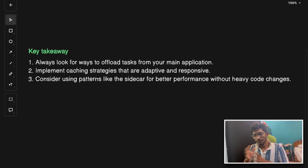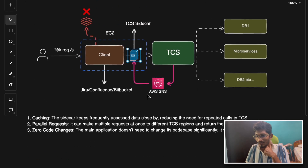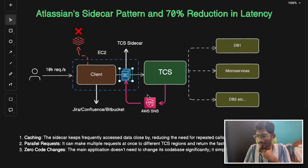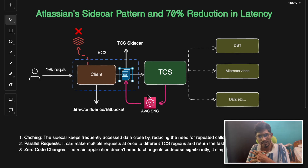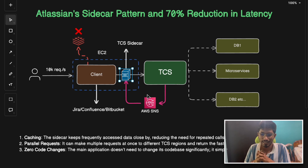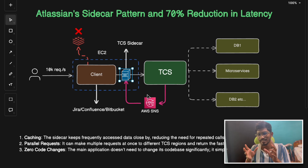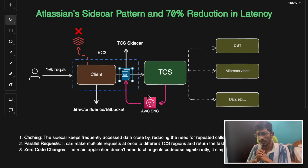That was today's discussion on how the sidecar pattern helped Atlassian reduce latency by 70% and make their application 99.99% available. This is a blog from Atlassian itself — I'll put the link in the description so you can go through and learn more. I hope you liked this video; if you found it helpful, drop a like and subscribe to the channel.